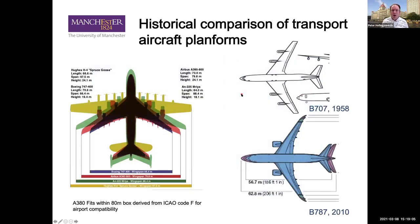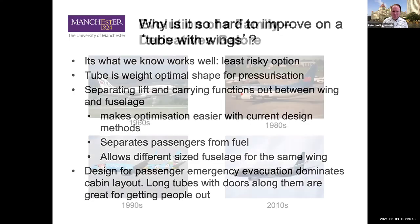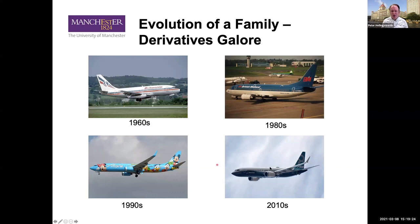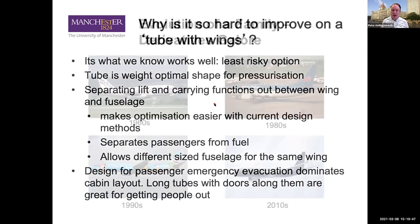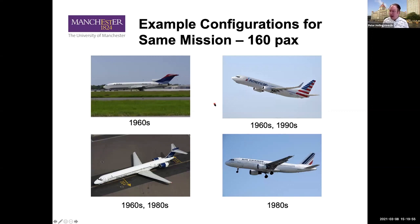What trends have driven underwing engines toward a more close-coupled position rather than being placed far out? The options were increased bypass ratio, improved computational fluid dynamics, improved ground handling infrastructure, financial risk aversion, or keeping up with others. Improved computational fluid dynamics have allowed placing the engine closer to the wing. We'll talk more about engine choice and placement next week when we discuss what it means for engine selection.